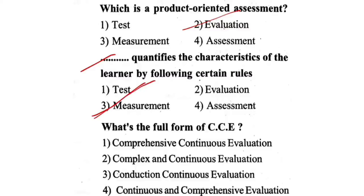Next question: What is the full form of CCE? First one, comprehensive continuous evaluation. Second one, complex and continuous evaluation. Third one, conduction continuous evaluation. Fourth one, continuous and comprehensive evaluation. The correct answer is fourth one — continuous and comprehensive evaluation.